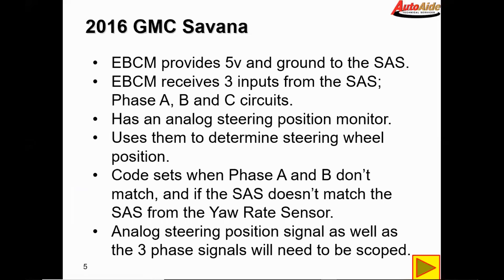It also has another signal circuit to go along with that 5 volt and ground circuit. So it uses these two position sensors to determine steering wheel position. According to the code set criteria, the code sets when phase A and B don't correlate, and if the steering angle sensor doesn't match the steering angle from the yaw rate sensor. As you're going around a corner, the vehicle compares the steering position against the yaw rate because they have to correlate. The analog steering position signal and the three phase signals will need to be scoped to find the issue.